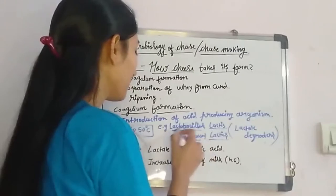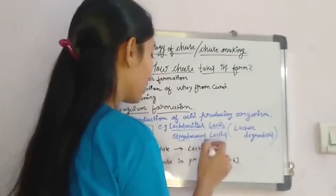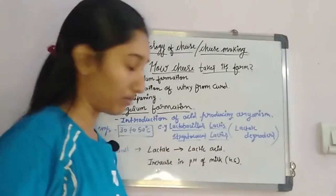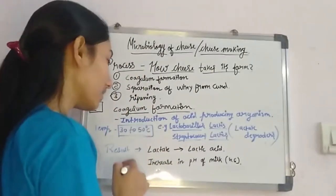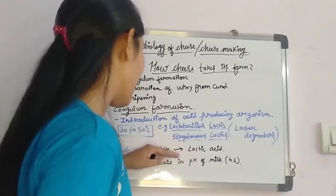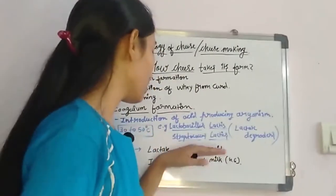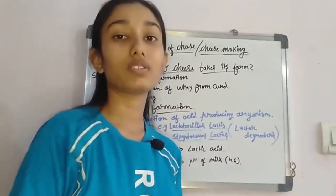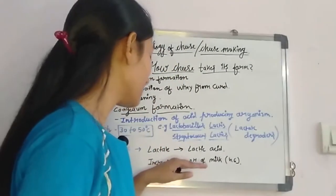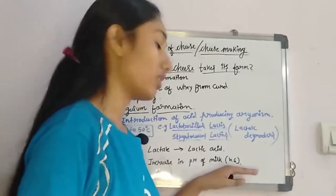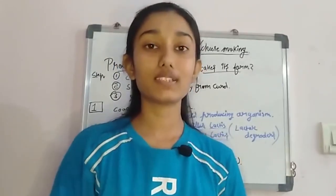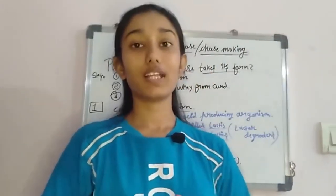The substrate for these organisms is lactose — they are lactate degraders. For example, Lactobacillus lactis and Streptococcus lactis work under 30 to 50 degrees Celsius. They utilize lactate and convert it into lactic acid, and hence acid production starts in the milk. This increases the acidity of the milk to around pH 4.6.